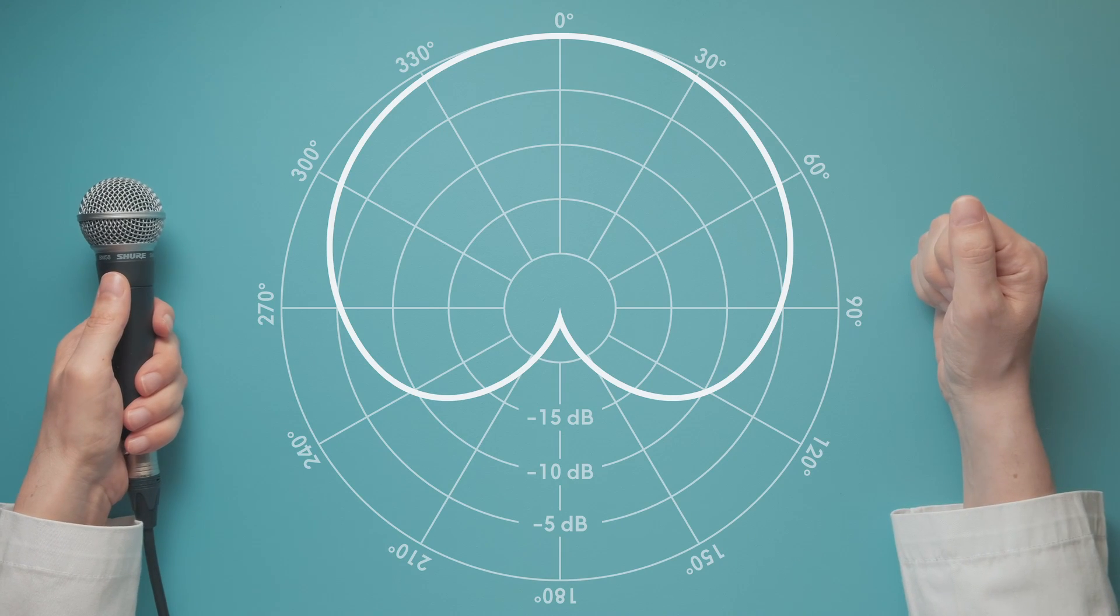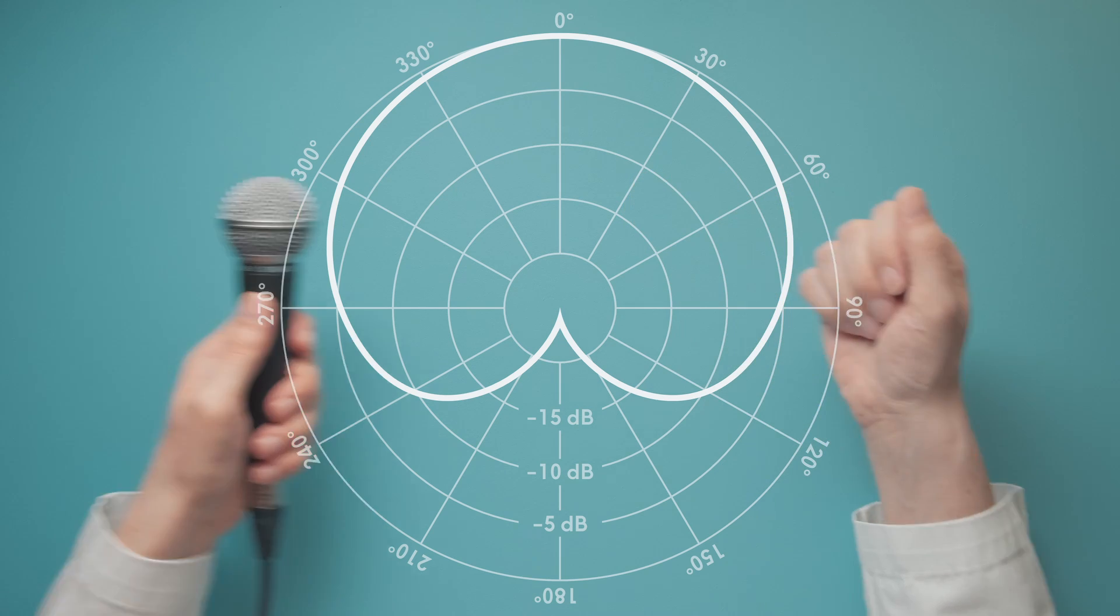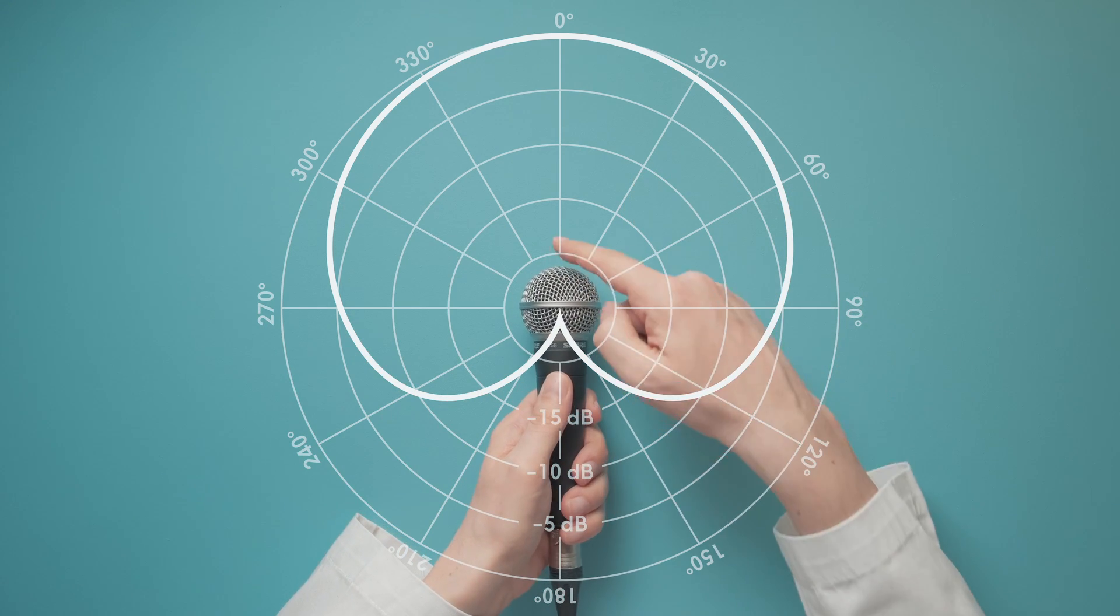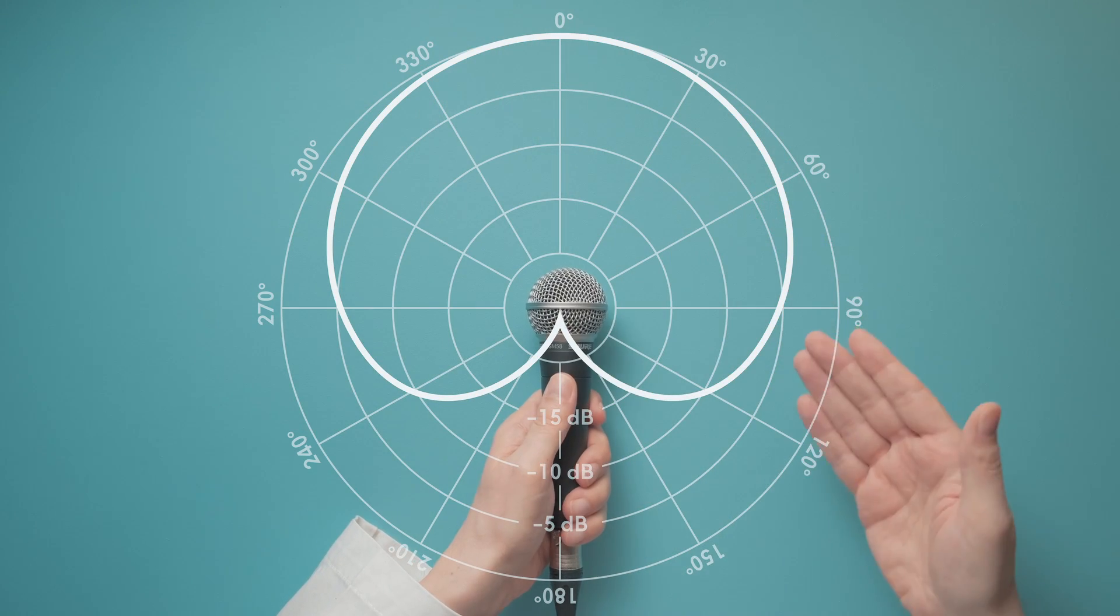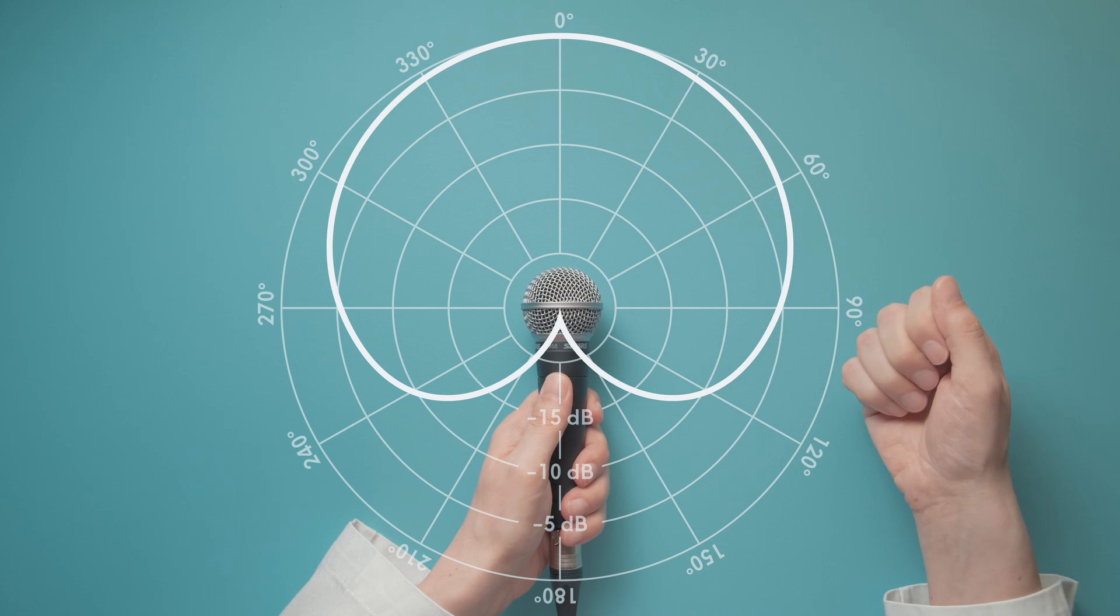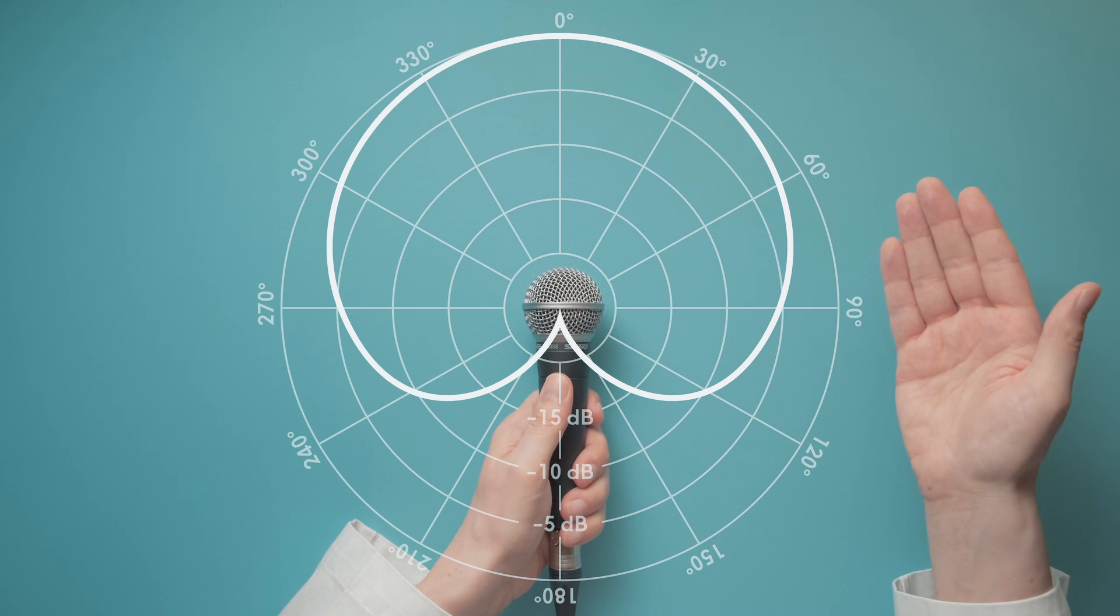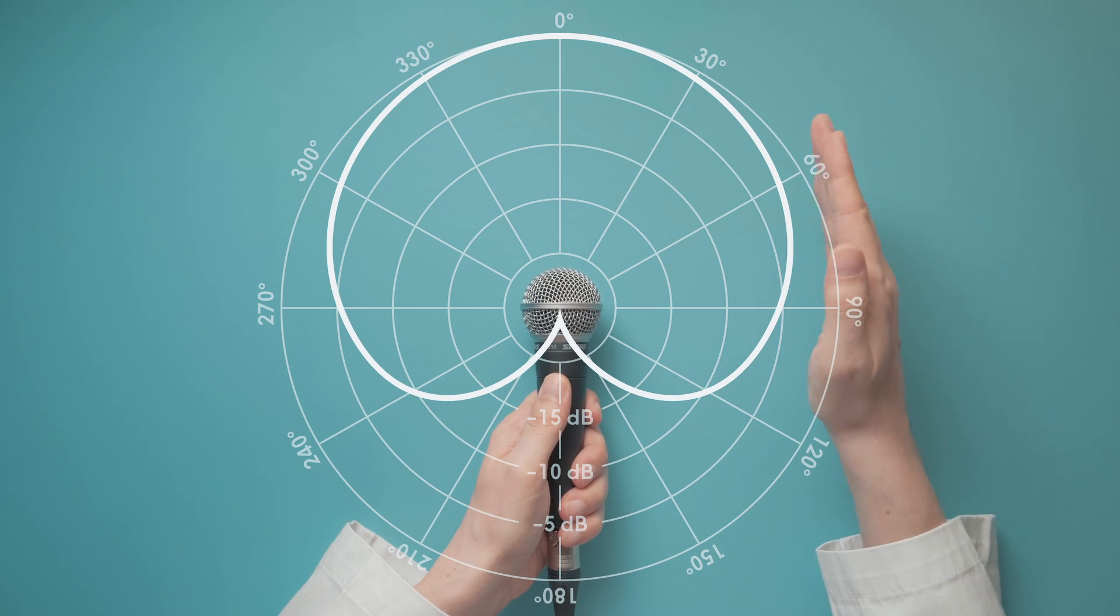Back to the polar pattern chart. How do you read this thing? Well, if zero degrees refers to the sensitive side of the microphone and you want to know how much less sensitive the microphone is at any other angle, let's say 90 degrees, just follow the line and read the value. At 90 degrees, the SM58 is about 5 to 6 decibels less sensitive.